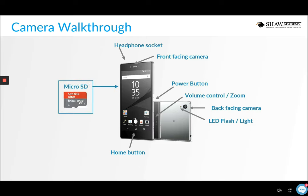A very handy feature on Android phones is the micro SD card slot. If you're taking a lot of high-resolution images they'll take up space quickly, so an additional memory card frees up a lot of storage. We'll be talking about backing up images in lesson seven. The USB port is also very handy for downloading photos and backing them up on your PC or Mac.